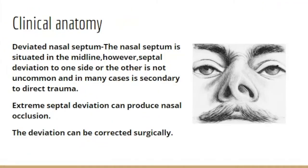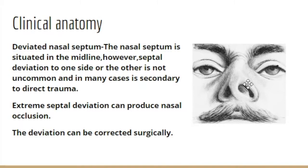Coming to clinical anatomy points relevant to the nasal septum: although the nasal septum is normally situated in the midline, it is not uncommon to see it deviated to one side. This makes one side of the nasal cavity larger and the other smaller, often secondary to direct trauma. An extreme septal deviation can produce nasal occlusion, and this deviation can also be corrected surgically.